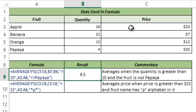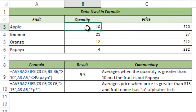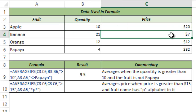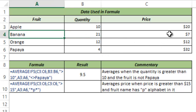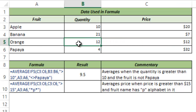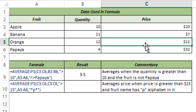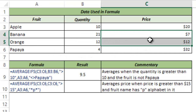Now let's see how it worked. It went to the first price point, which is 20, and checked both conditions. The first condition — quantity greater than 10 — is not met, so it's excluded. The second price point is 7: quantity is 21 (greater than 10) and the fruit is banana (not papaya), so both conditions are true and it's included. The third price point is 12: quantity is 12 (greater than 10) and fruit is orange, so it's included. The fourth has quantity less than 10 and is papaya, so it's excluded. Only 7 and 12 are averaged: 7 plus 12 equals 19, divided by 2 gives 9.5.